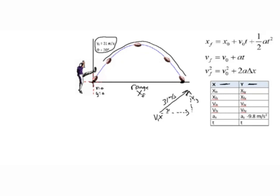We're going to use trigonometry. We use the cosine function because cosine gives the adjacent side to the angle. So vi in the x direction — our initial velocity in the x direction — is going to be 31 meters per second times the cosine of 30 degrees. When I do that math, I get 26.8 meters per second, and that is in the positive x direction. So I'm going to put 26.8 meters per second into the table.